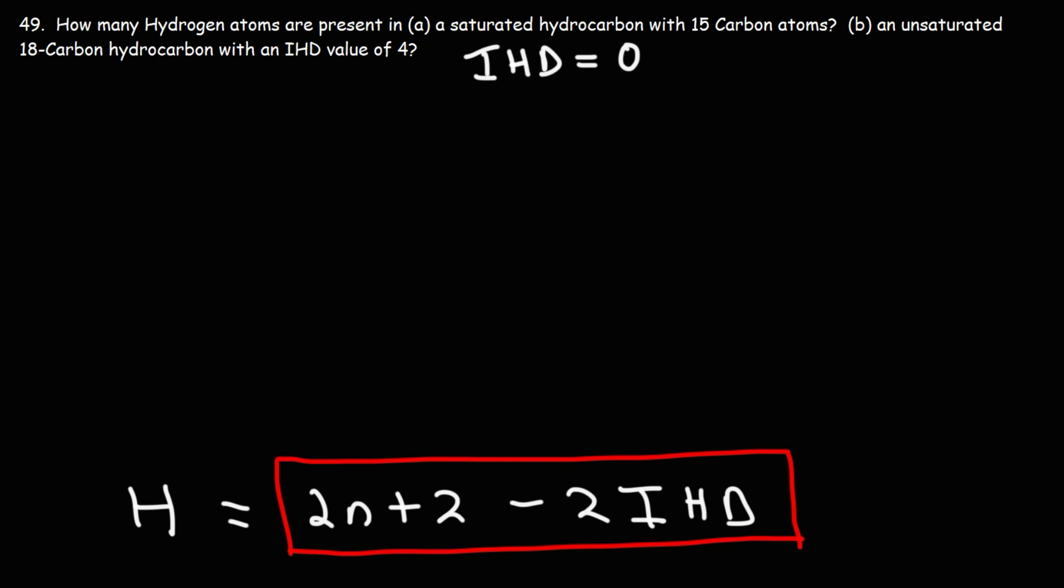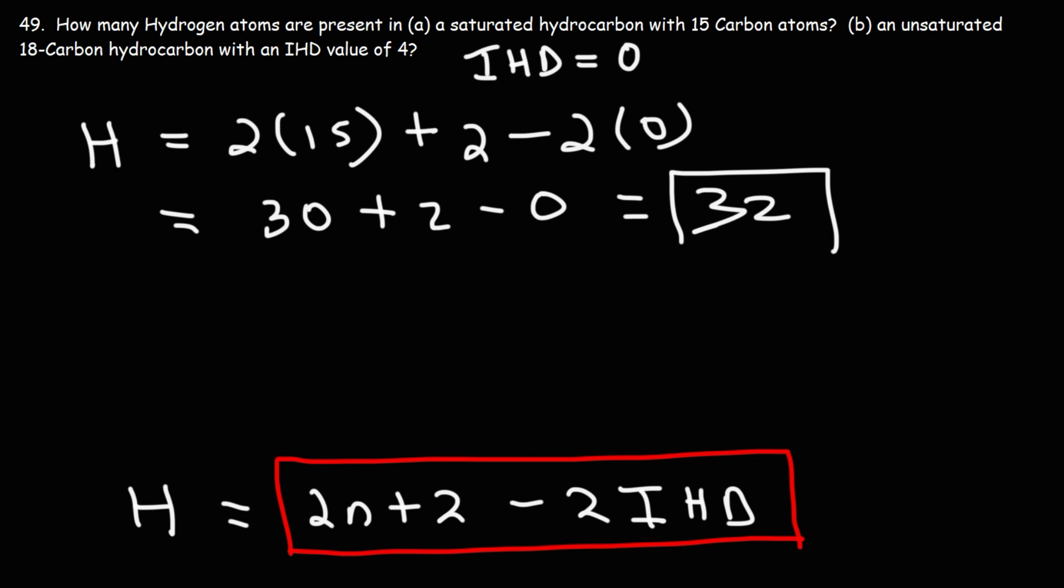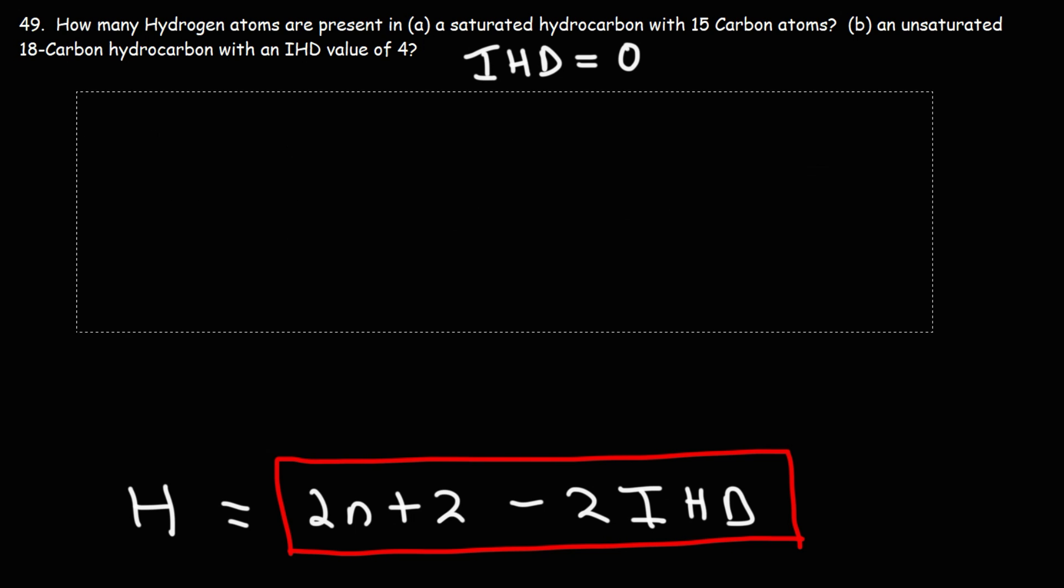So let's redo this problem using this formula. So we have 15 carbon atoms and an IHD value of 0. So 2 times 15 is 30. 2 times 0 is 0. 30 plus 2 is 32. As you can see, it's a lot easier to calculate the number of hydrogens this way. So that's the answer for part A. We have 32 hydrogen atoms.